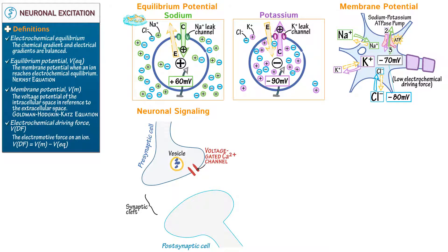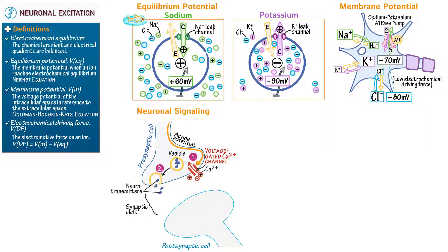Draw a voltage-gated calcium ion channel, then show an action potential travel down the presynaptic cell axon and depolarize the axon terminal through sodium influx, which ultimately triggers voltage-gated calcium ion channels to open. Calcium has an extracellular to intracellular concentration ratio of greater than 10,000 to 1 and a very large driving force.